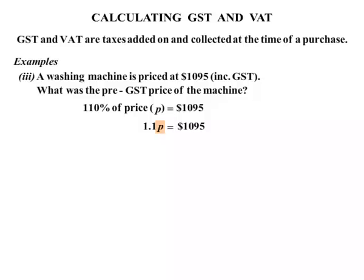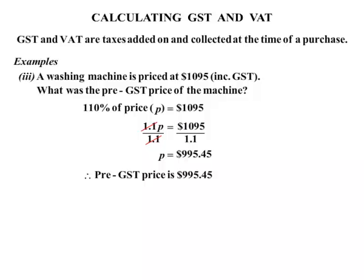Same idea as before — let's get P by itself. At the moment it's being multiplied by 1.1, so we divide both sides by 1.1. On the left hand side they'll cancel, so therefore P is by itself. $1095 divided by 1.1 works out to be $995.45. So in this case, the pre-GST price is $995.45.